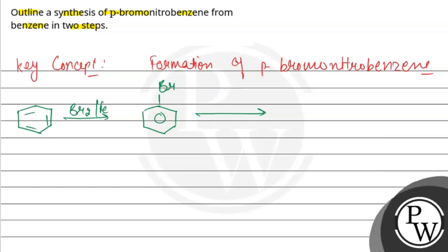Next is nitration. We use HNO3 and H2SO4 at a temperature of 50 degrees Celsius for the nitration step.